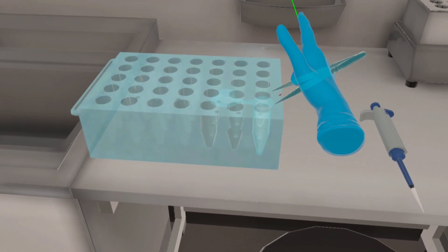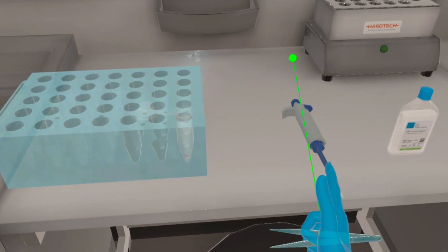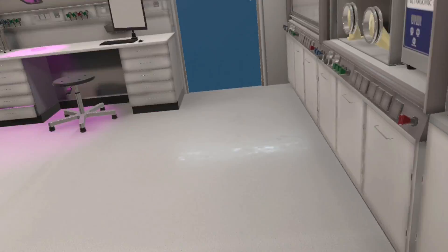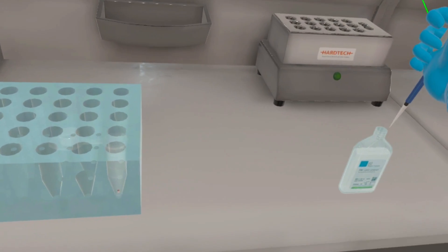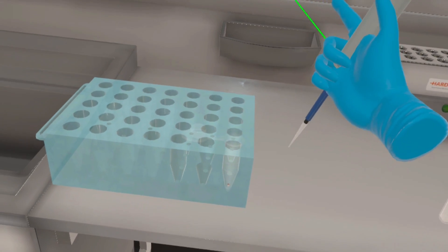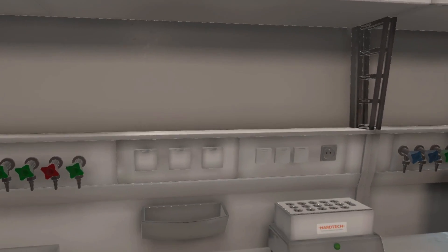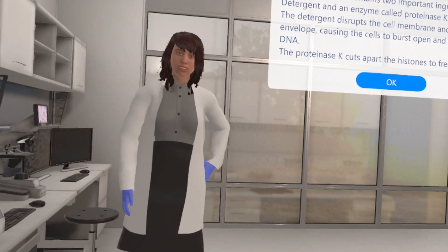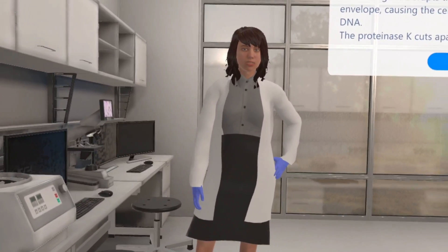Put them in the highlighted microtube or Eppendorf placed on a stand. Now grab the highlighted micropipette and collide it with the highlighted bottle to fill in the lysis solution. The lysis solution contains two important ingredients: detergent and an enzyme called proteinase K. The detergent disrupts the cell membrane and nuclear envelope, causing the cells to burst open and release their DNA. The proteinase K cuts apart the histones to free the DNA.